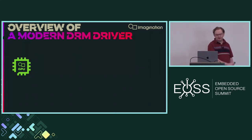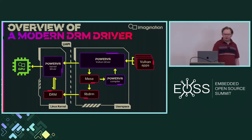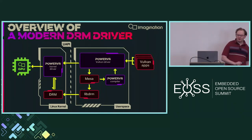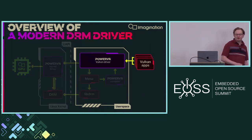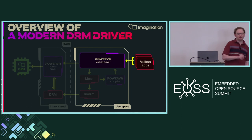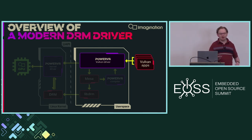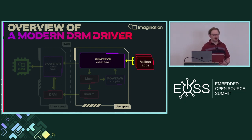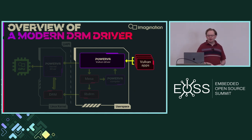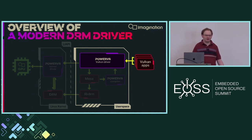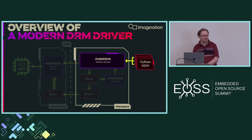On top of that GPU sits our driver stack. I'm sure you've all seen this kind of overview diagram before. One thing I really want to point out: the user space section is specifically labeled Vulkan — this is deliberate. Our driver stack has been developed from the ground up to be a Vulkan driver. OpenGL and OpenGL desktop will come from the Zink layer in Mesa, which implements them on top of Vulkan, as long as we implement a bunch of extra compatibility extensions.